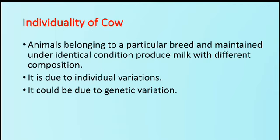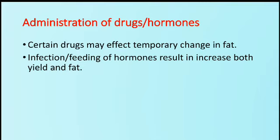The next factor is individuality of the cow. Animals belonging to a particular breed maintained under identical conditions can produce milk with different composition due to individual and genetic variations. The next factor is the administration of drugs or hormones. Certain drugs may affect a temporary change in fat. Infection or feeding of hormones results in an increase in both yield and fat of milk.